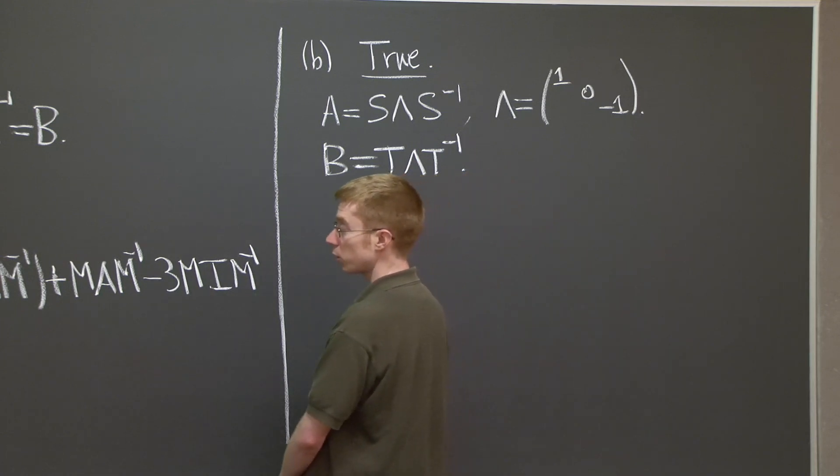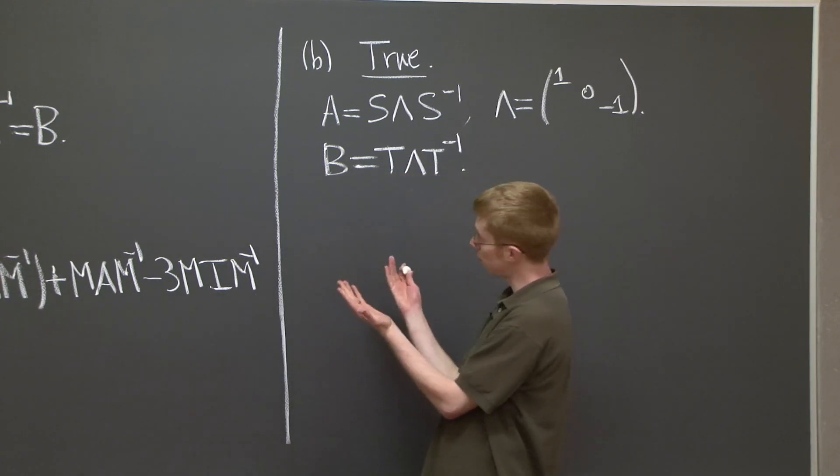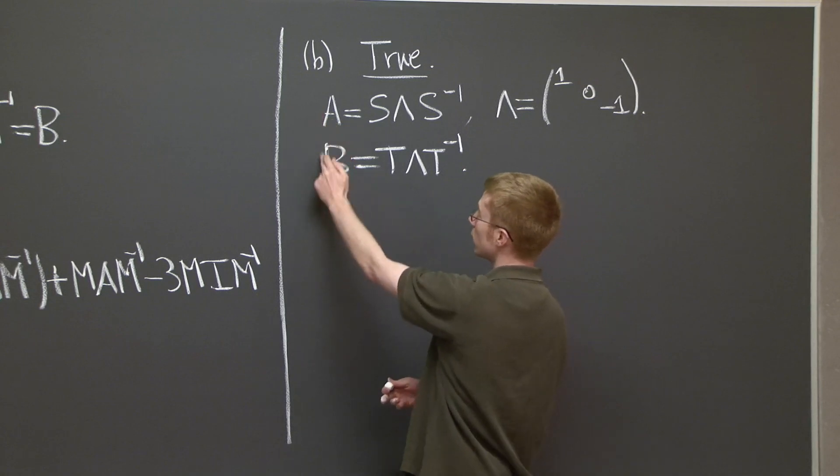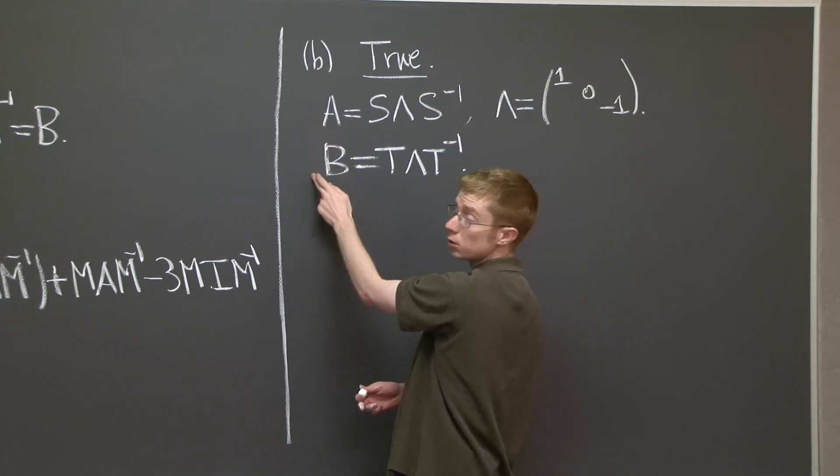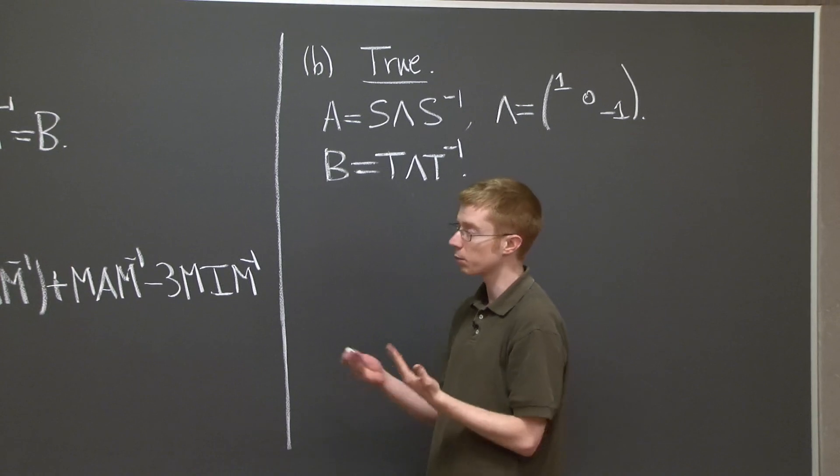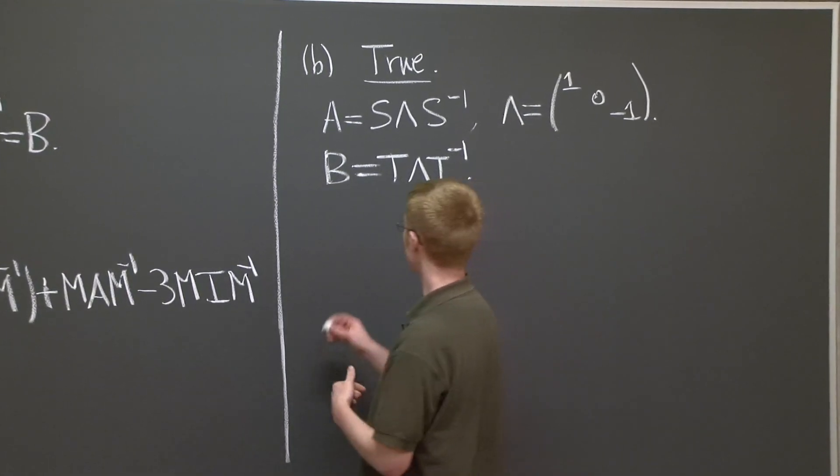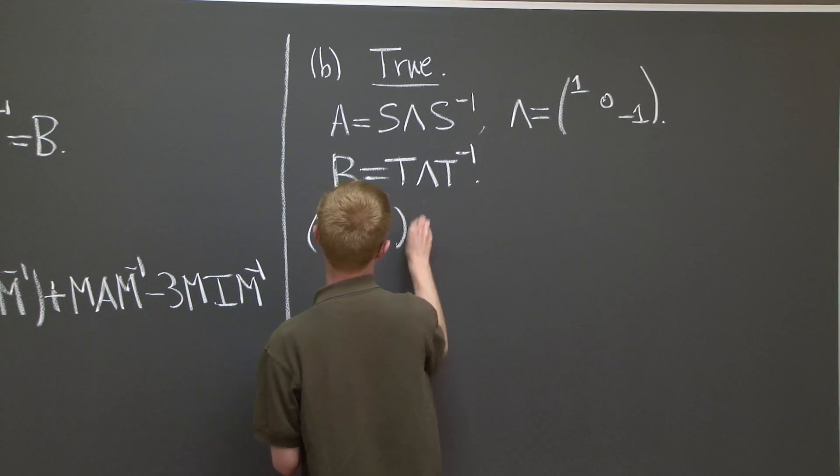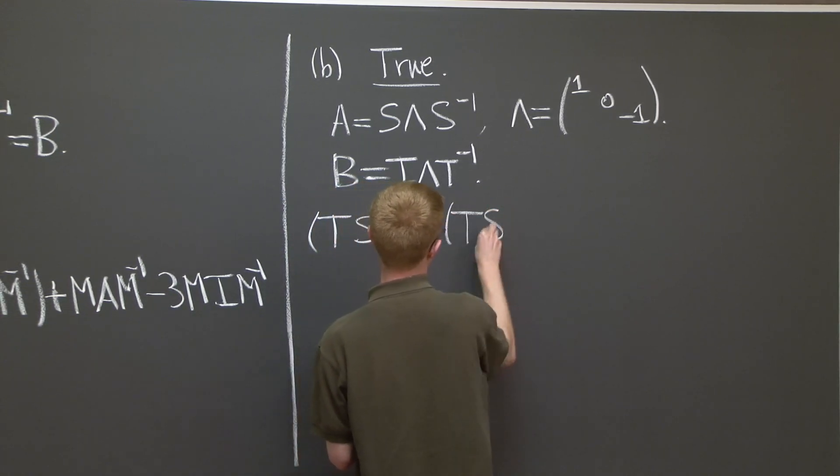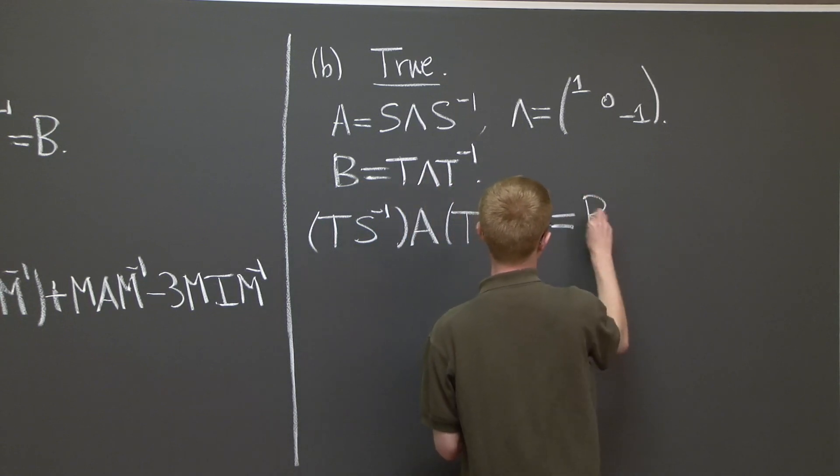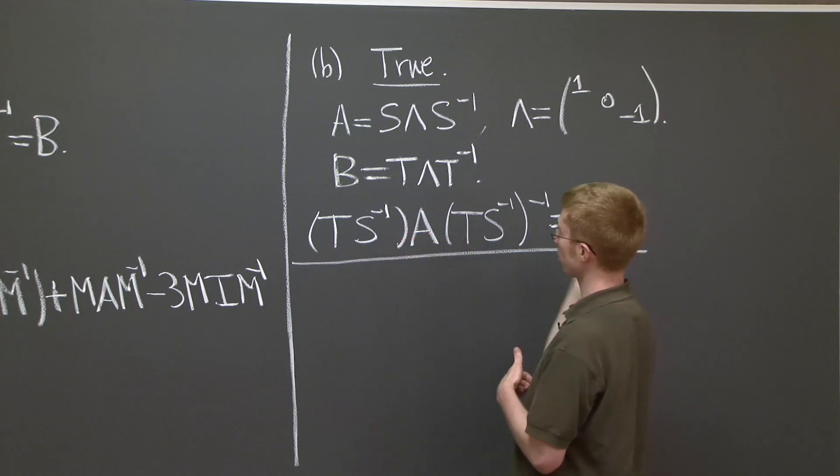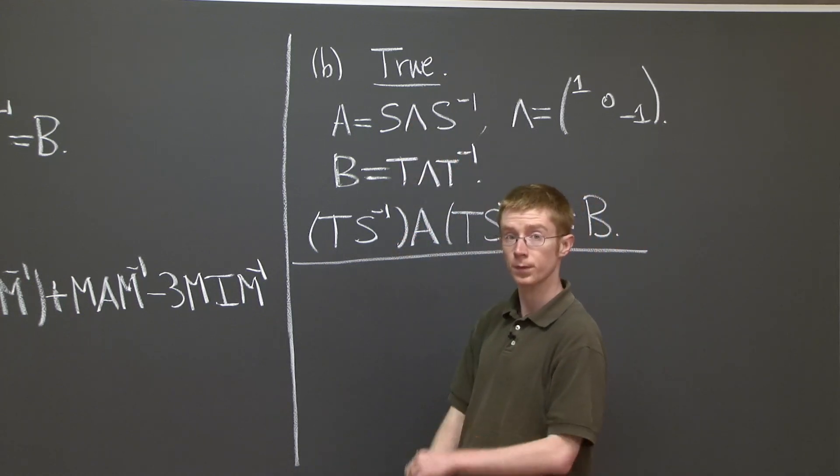Now before we check it, let's just save the point. The point is if two matrices are similar to the same matrix, then they're similar to each other. Similarity is a transitive relation. And I'll just let you check that you can take TS⁻¹A times TS⁻¹ inverse, and you'll get B. This follows directly from just these two relations.